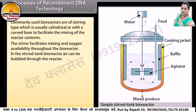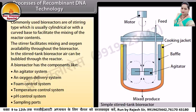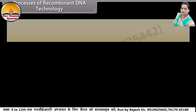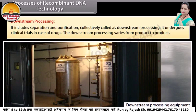The stirrer facilitates mixing and oxygen availability throughout the bioreactor. In the stirred tank bioreactor, air can be bubbled through the reactor. A bioreactor has components like an agitator system, an oxygen delivery system, a foam control system, a temperature control system, a pH control system, and sampling ports. Downstream processing includes separation and purification, collectively called downstream processing. It undergoes clinical trials in the case of drugs. The downstream processing varies from product to product.